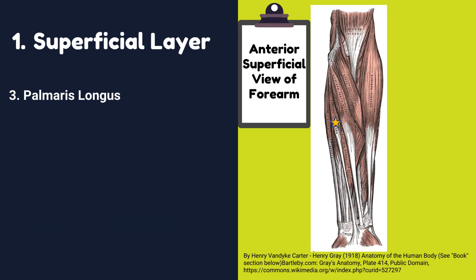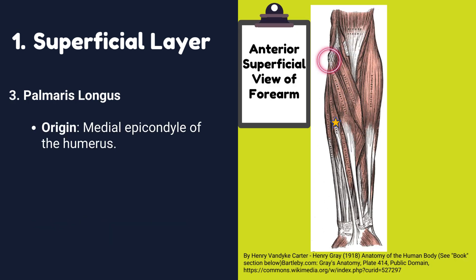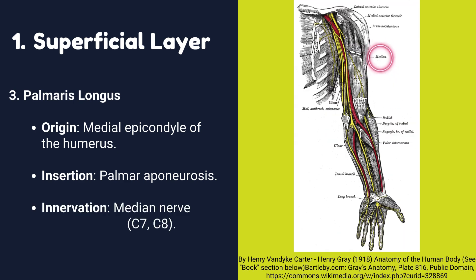Number three: Palmaris longus muscle. Origin: it originates from the medial epicondyle of the humerus. Insertion: it is inserted into the palmar aponeurosis. Innervation: it is innervated by the median nerve.